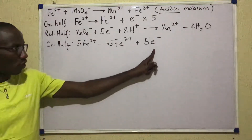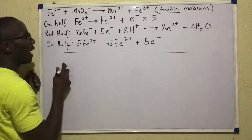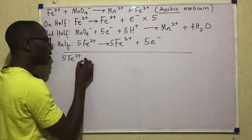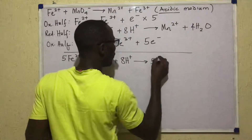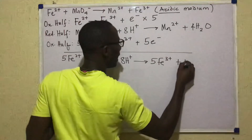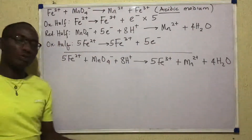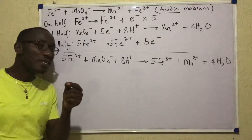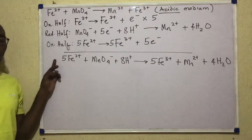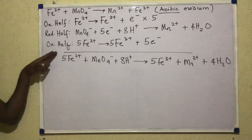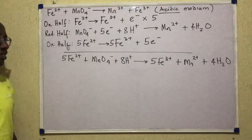Now I'm happy — electron loss equals electron gain, so I'm free to add up. Adding the two equations: 5Fe2+ + MnO4− + 8H+ → 5Fe3+ + Mn2+ + 4H2O. The 5 electrons on both sides cancel out and are not brought down. Note: if after adding up you find water molecules appearing on both sides, you must eliminate them so that water appears on only one side. Nothing should appear on both sides of a balanced redox equation.